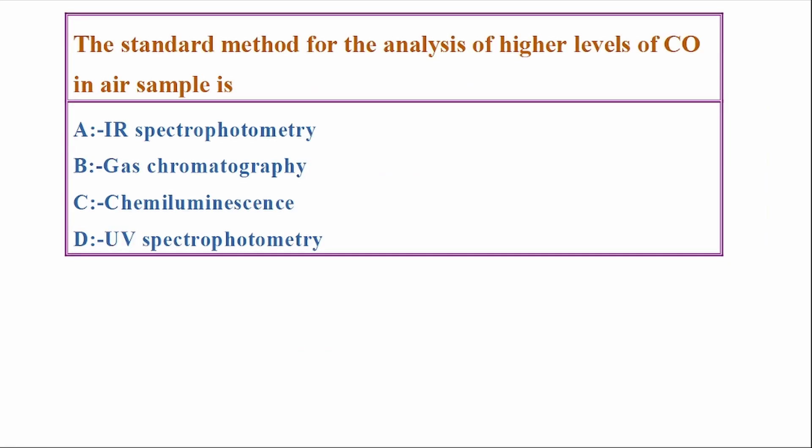The standard method for the analysis of higher levels of carbon monoxide in air samples is: Options - infrared spectrophotometry, gas chromatography, chemiluminescence, UV spectrophotometry. Answer: Option A, IR or infrared spectrophotometry.